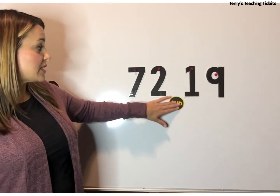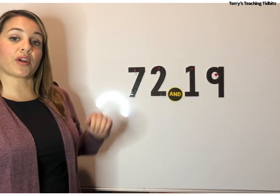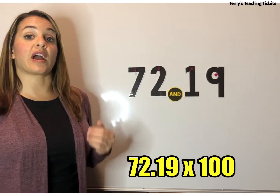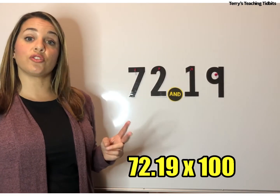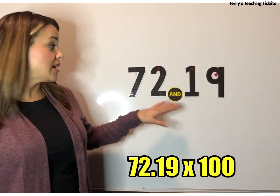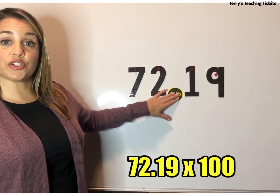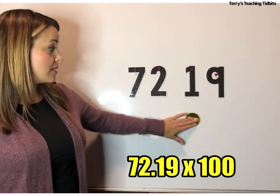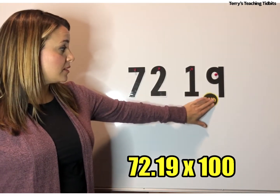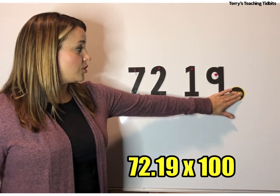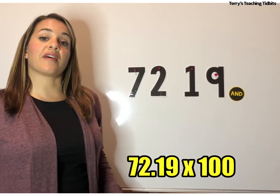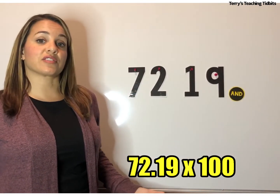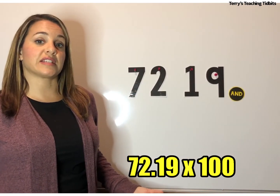If you take the same number and multiply it by a hundred, that's two powers of 10, so you would move the decimal point two places — one, two. Now you have 7,219.